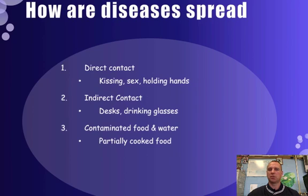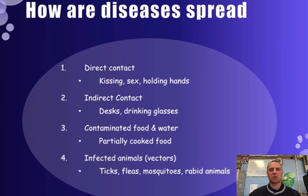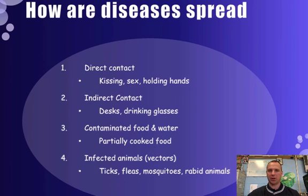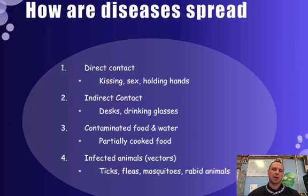The third way is contaminated food and water — if food is partially cooked, or if water has something like polio in it. The last way is through vectors, which are infected animals. The most common examples are ticks, fleas, and mosquitoes. Mosquitoes are vectors for malaria — they transmit it from person to person. Fleas are most famous for the bubonic plague, one of the most deadly plagues to ever hit the earth, killing almost one-third of the population. Ticks can cause Rocky Mountain spotted fever. So those are the four ways diseases can spread.